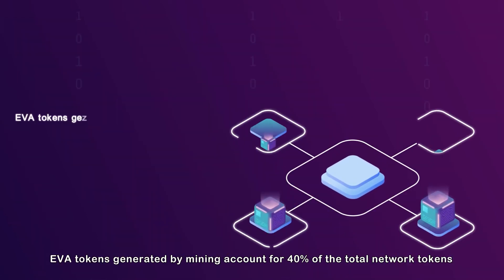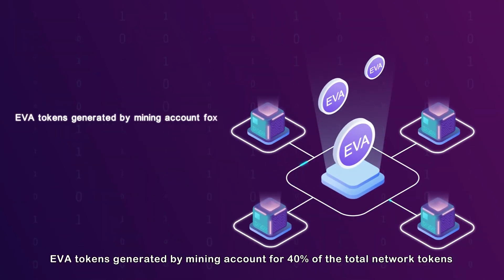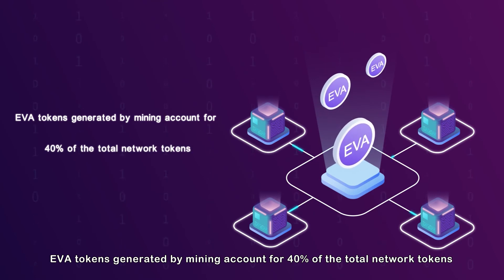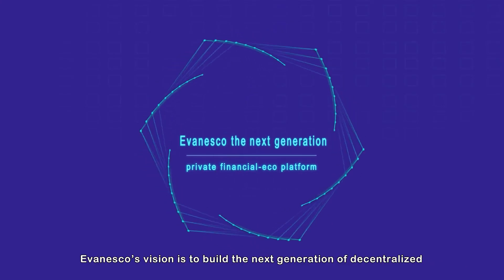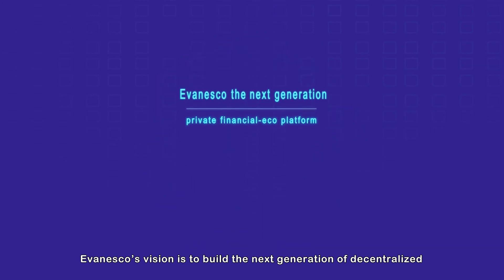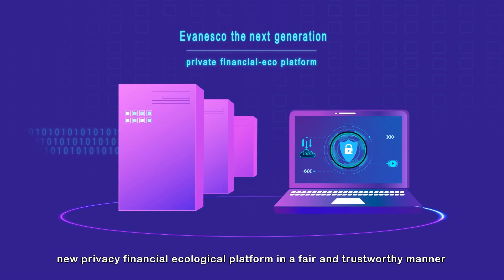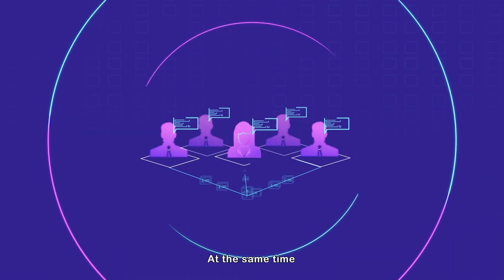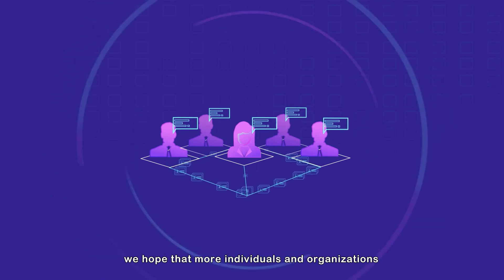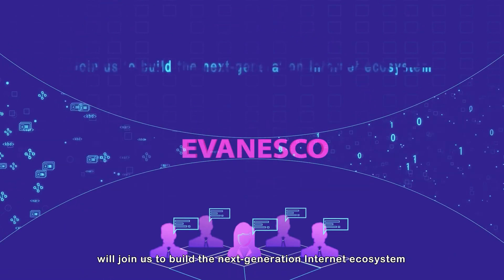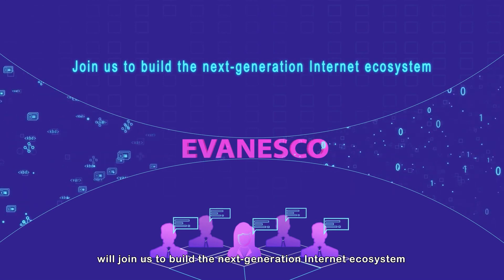EVA tokens generated by mining account for 40% of the total network tokens. Evanesco's vision is to build the next generation of decentralized new privacy financial ecological platform in a fair and trustworthy manner. We hope that more individuals and organizations will join us to build the next generation internet ecosystem.